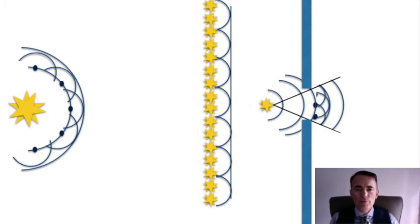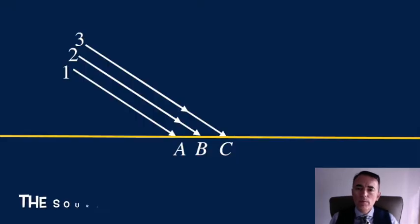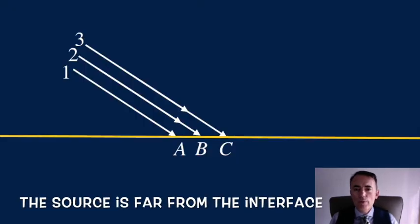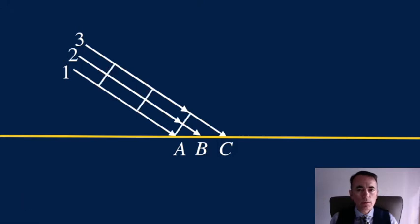To explain the law of reflection, Huygens considered the wavefronts. Assume that the source is far, so those wavefronts come as parallel lines which are perpendicular to what would be the rays of light. If there was no interface, then all wavefronts would move forward and the rays would continue the original path.